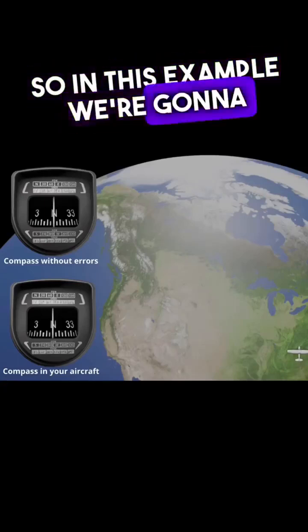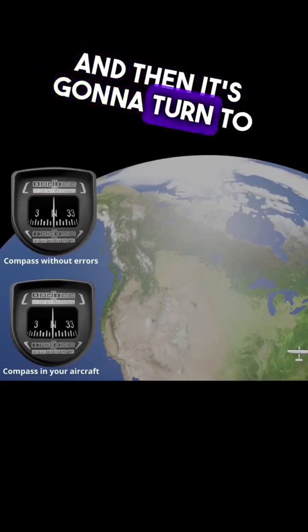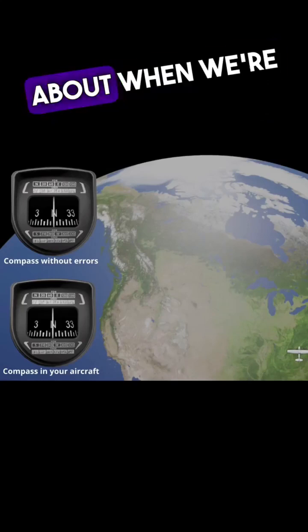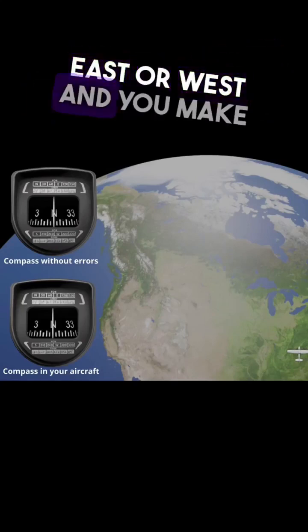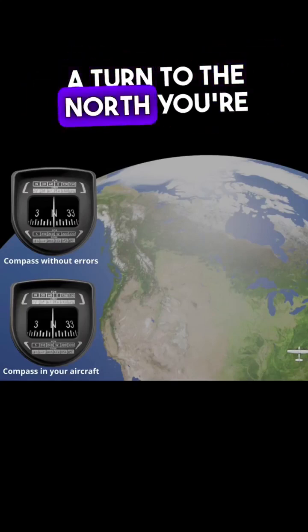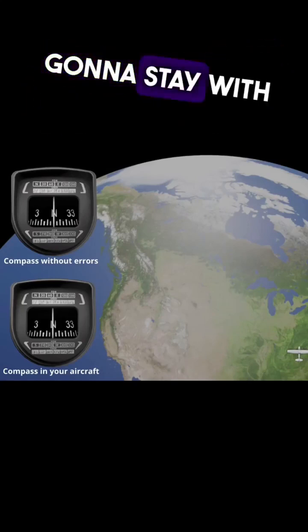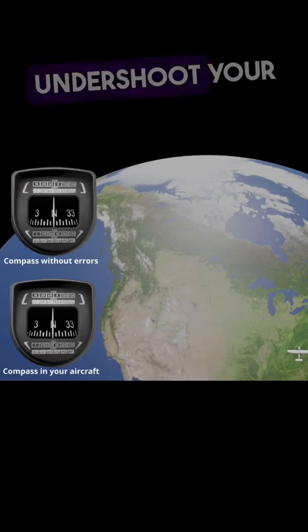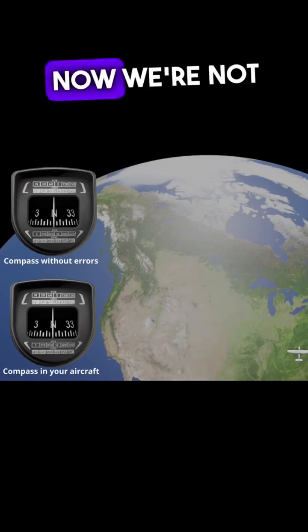In this example we're going to have an aircraft flying due north and then it's going to turn to the west. We talked about when you're flying to the east or west and you make a turn to the north — you're going to have that lag error that stays with you the whole time, so you have to undershoot your final heading.